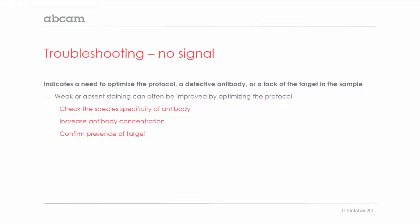When you observe this, check if your antibody is specific for the species you are investigating. You could also titrate the antibody again, as you may need to increase the concentration. We would also recommend using other techniques to confirm the presence of your target.